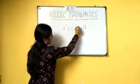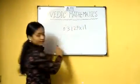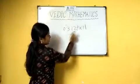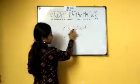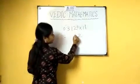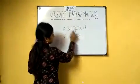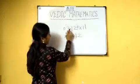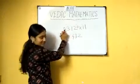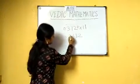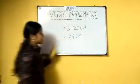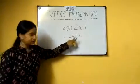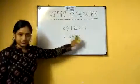For 312 into 11, put 0 on each side and add adjacent digits: 2 plus 0 is 2, 2 plus 1 is 3, 3 plus 1 is 4, and 0 plus 3 is 3. So our answer becomes 3432.